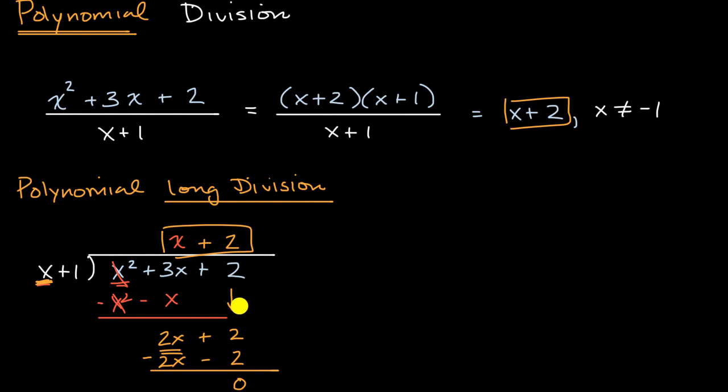Now, an interesting scenario that we're also going to approach in the next few videos is what if things don't divide cleanly? For example, if I were to add one to x squared plus three x plus two, I would get x squared plus three x plus three. And if I were to try to divide that by x plus one, well, it's not going to divide cleanly anymore.